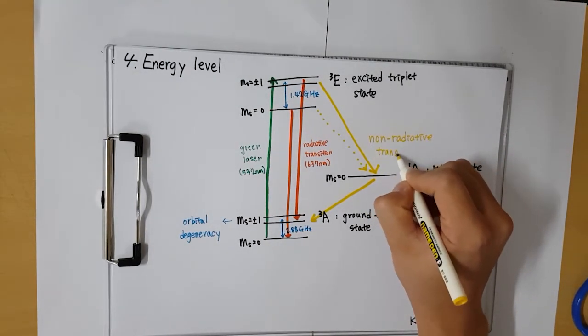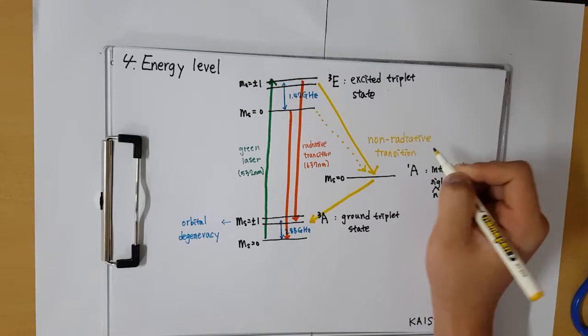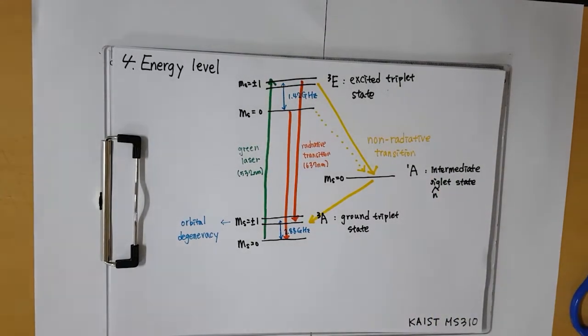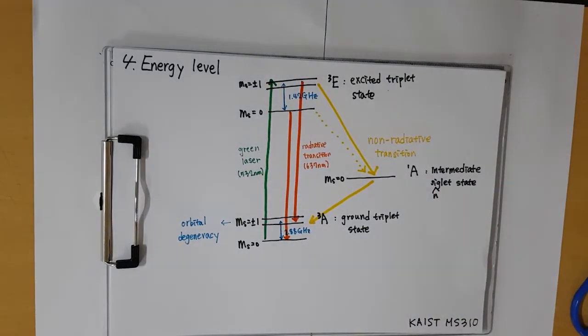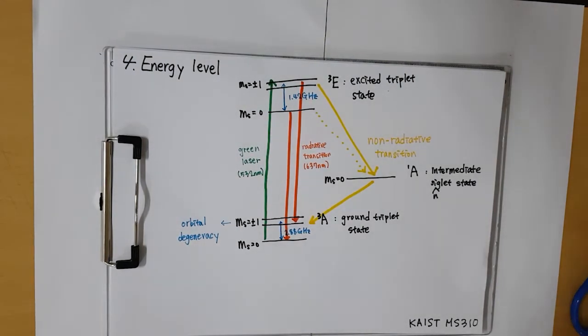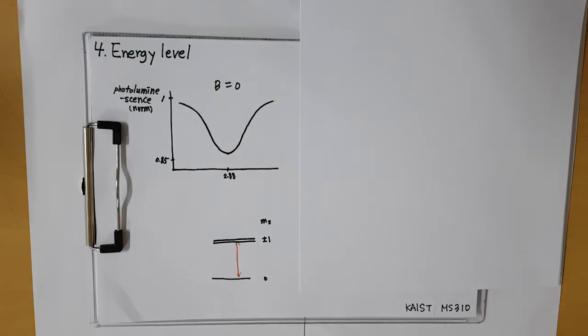However, the rate of this inter-system crossing is much lower than ms plus minus 1 state. There are more portions of non-radiative transition for ms plus minus 1 than ms0.